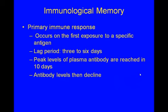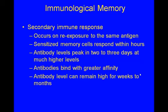Immunological memory: you have a primary immune response, which occurs on the first exposure to a specific antigen. There's a lag period of about three to six days, then peak levels of plasma antibodies are reached in about 10 days, and then antibody levels start to decline. The second time you come in contact with that same antigen, those sensitized memory cells respond within hours. Antibody levels peak in two to three days at much higher levels than the initial exposure, bind with greater affinity, and remain high for weeks or months.